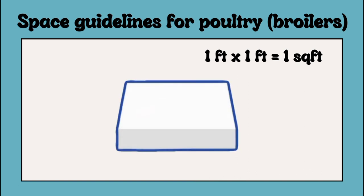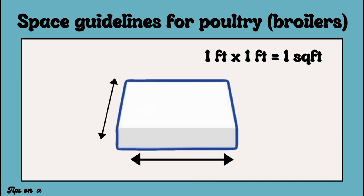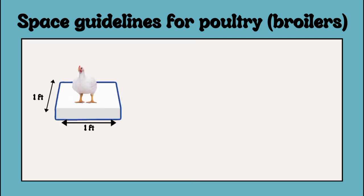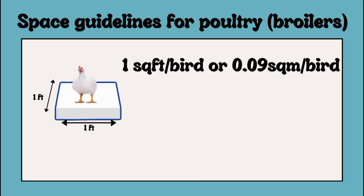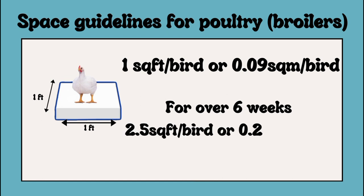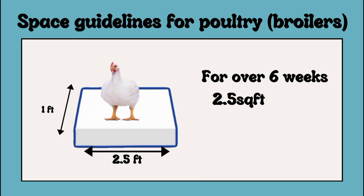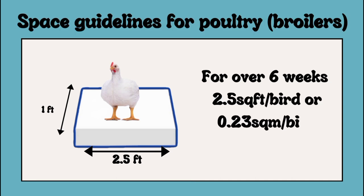A broiler floor space requirement per adult broiler chicken is one square foot per bird, or 0.09 square meters, in a deep litter system. But if you plan on raising your broilers for over six weeks, you can go as high as 2.5 square feet per bird, which is 0.23 square meters per bird.